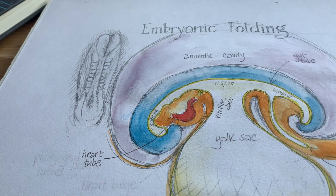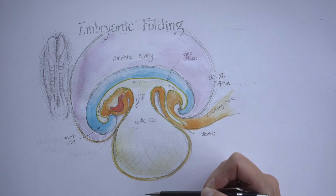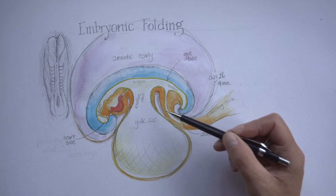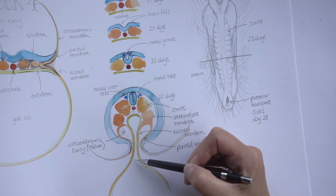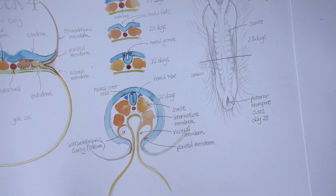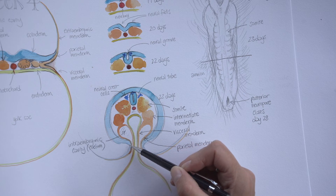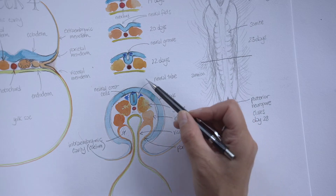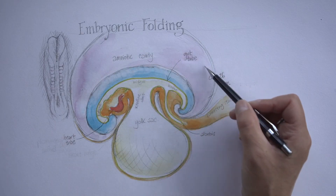Now let's look at a transverse section — a cross section — at 90 degrees, through the midgut, vitelline duct, and yolk sac. There's the midgut with the vitelline duct attaching to the yolk sac on the outside. In this view you can see how the ectoderm has wrapped completely around the embryo — no longer just on the dorsal side — and the amniotic cavity has been pulled right around the embryo as well. The folding in both cephalocaudal and lateral directions has pulled the amniotic cavity all around the embryo.